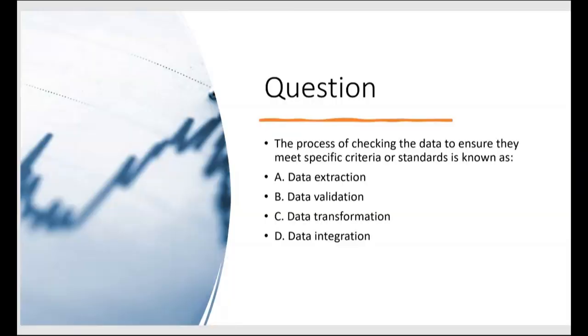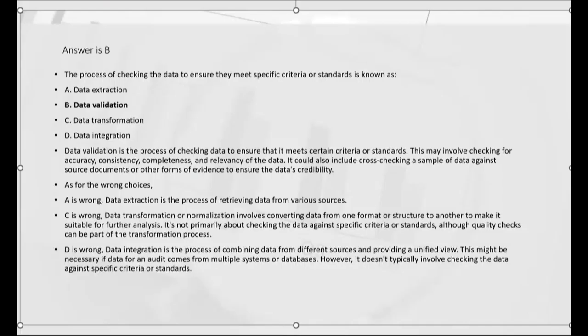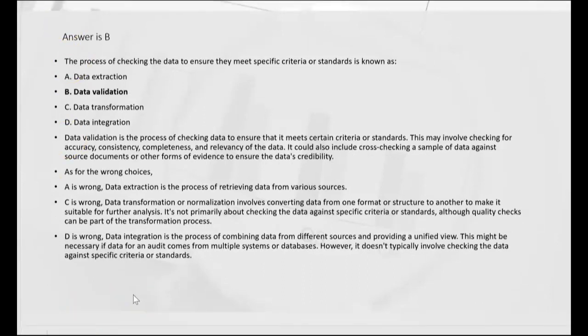The process of checking the data to ensure they meet specific criteria or standards is known as what? Is that extraction? No. Is that validation? Yes, that sounds right. Transformation? Integration? No. The answer is B — validation. Validation is the process of checking data to ensure it meets certain criteria or standards. This may involve checking for accuracy, consistency, completeness, and relevancy. It could also include cross-checking a sample of data against source documents to ensure the data's credibility.